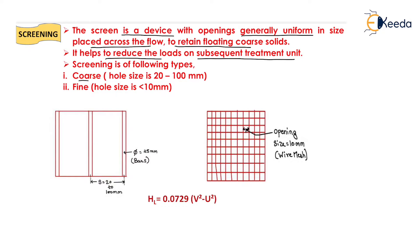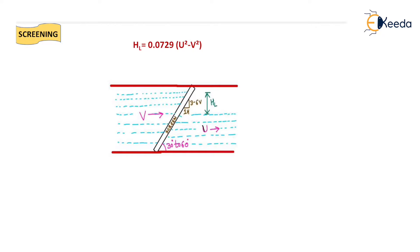Screening is of two types. The first is the coarse screen, also known as a trash screen, where the spacing between bars is 2200 mm and the bar size is 25 mm diameter. The fine screen is also known as a mesh screen, and its hole size is less than 10 mm. The head loss formula is 0.0729(u² − v²), where u is the velocity after the screen and v is the velocity before the screen.